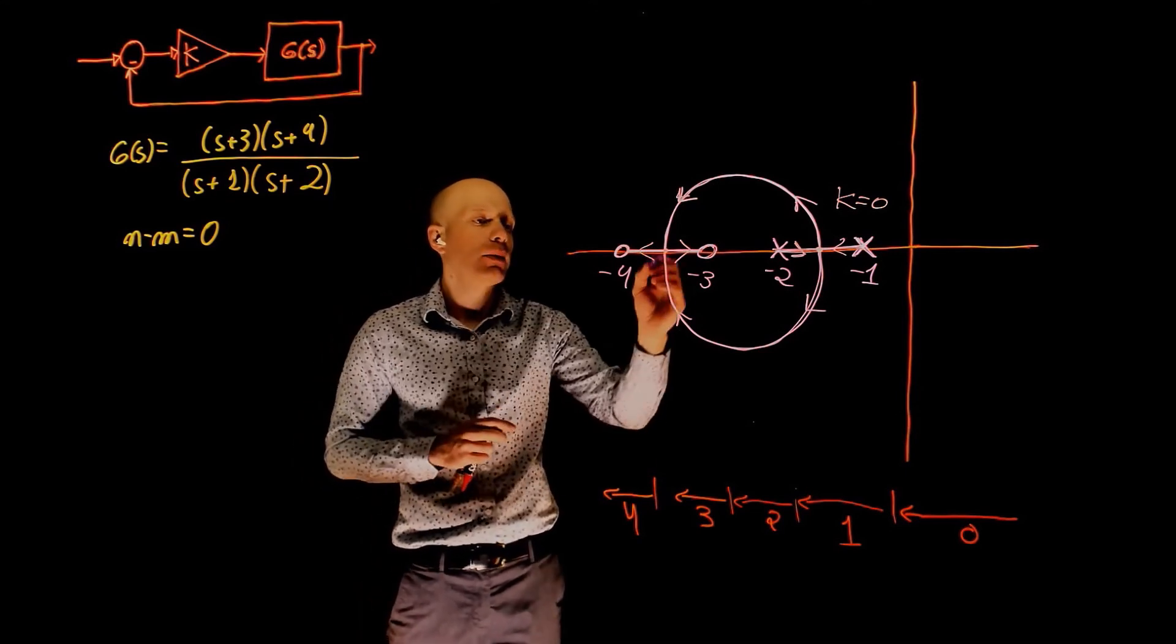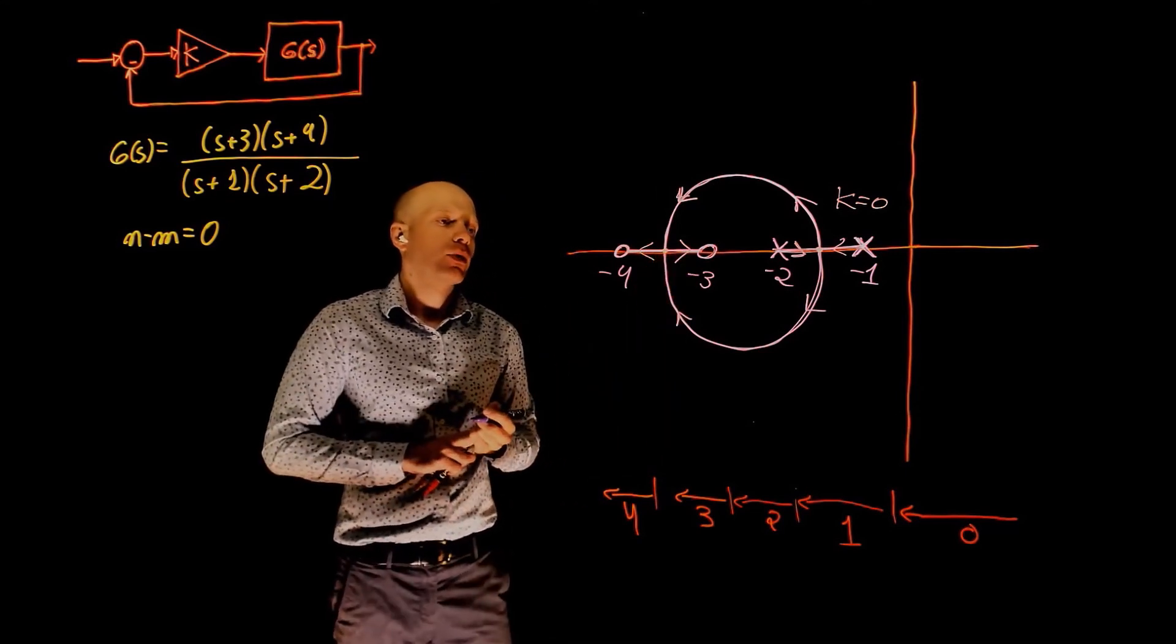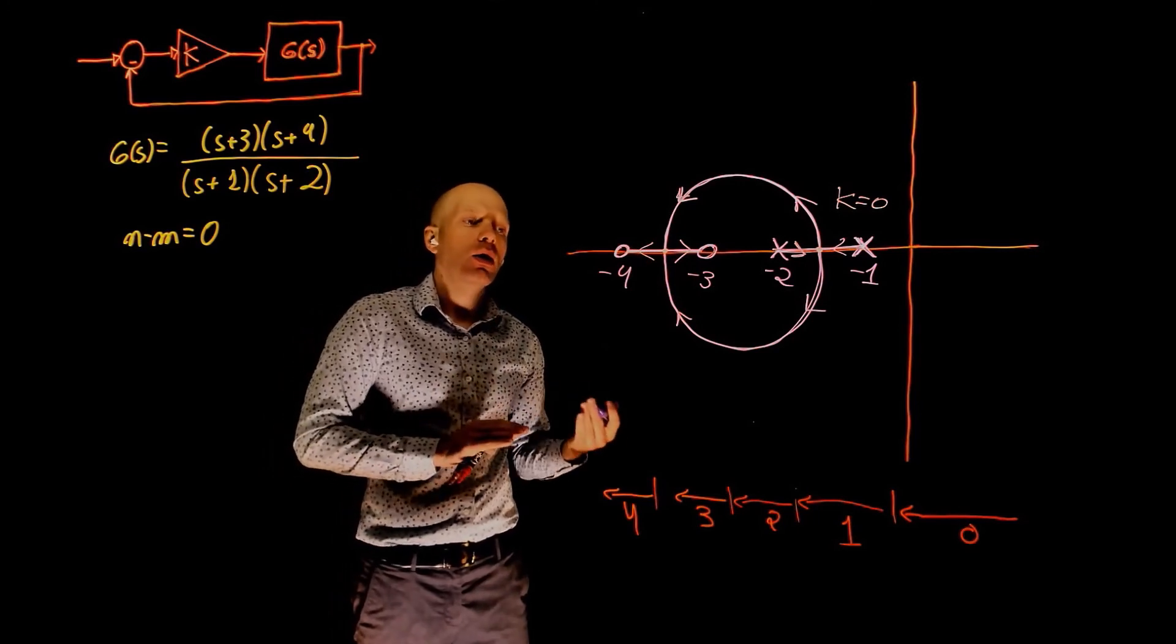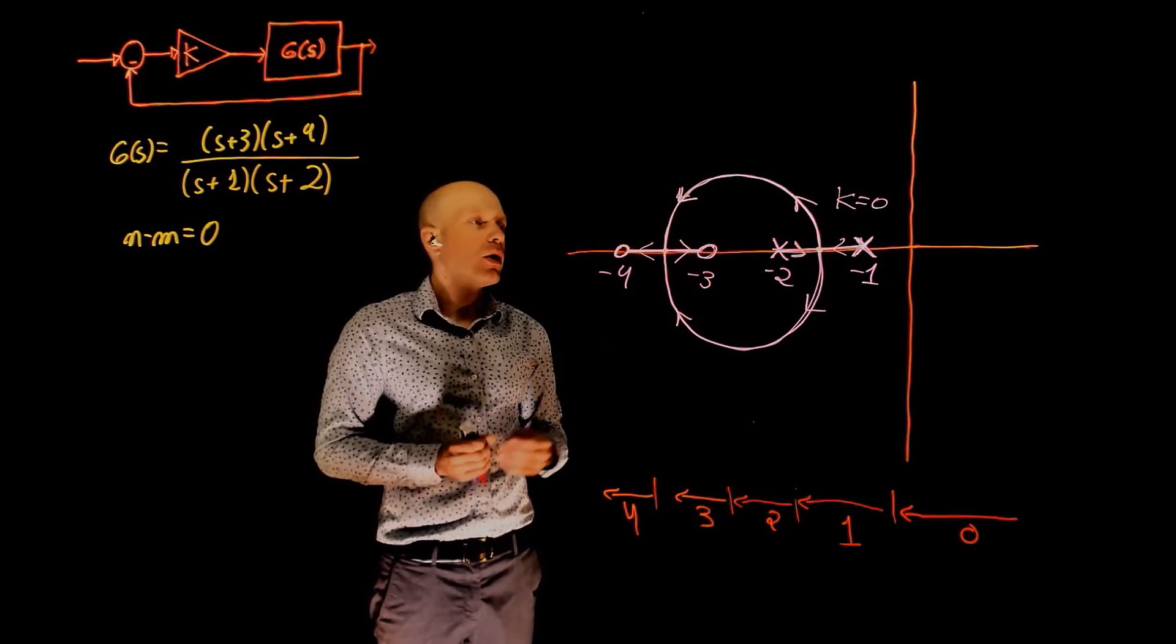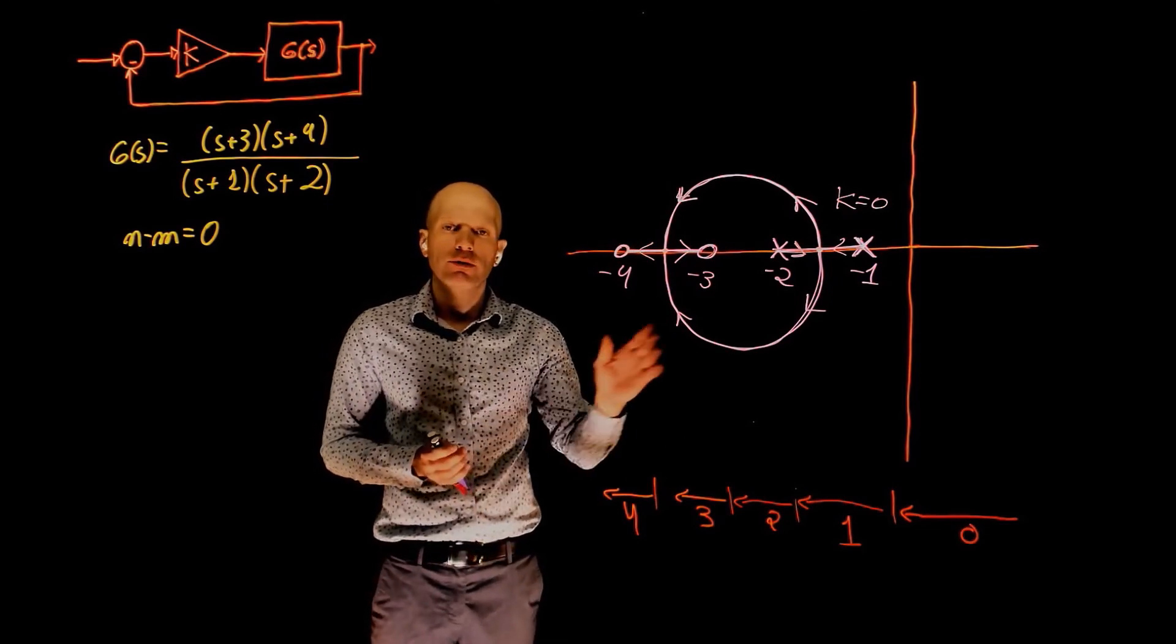The system is now underdamped up to this point, when it again becomes overdamped, and then they go to each of the zeros. The system is never unstable, and these are the main conclusions that we can draw from this root locus.